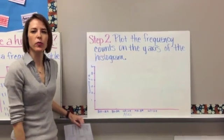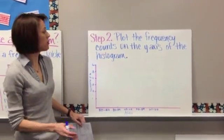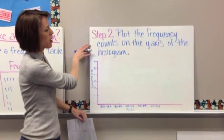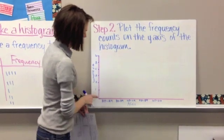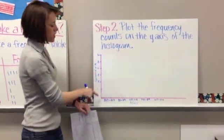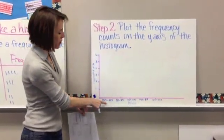All right, so now that you have your frequency table, you're going to use your frequency table to plot the frequency counts on the y-axis of the histogram. So basically, you have our x-axis here and our, I'm sorry, our x-axis here and our y-axis here. So on the x-axis, you have your intervals, right?